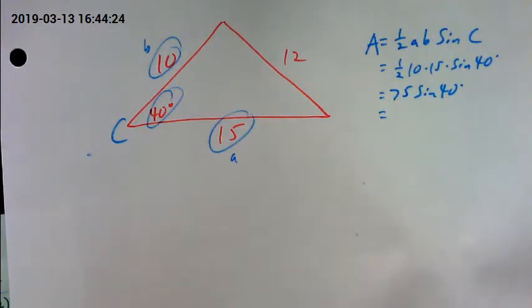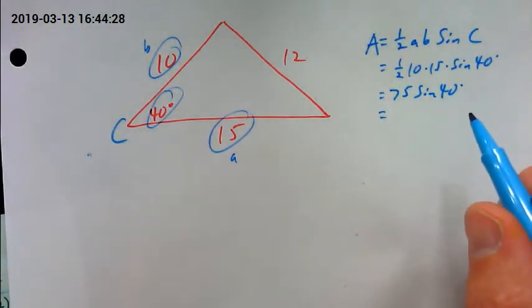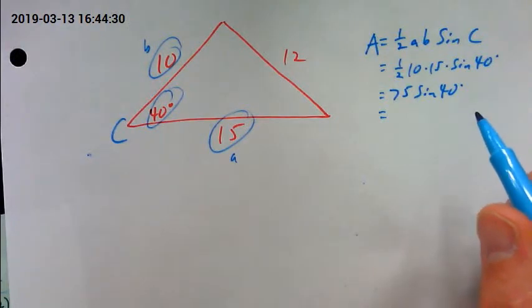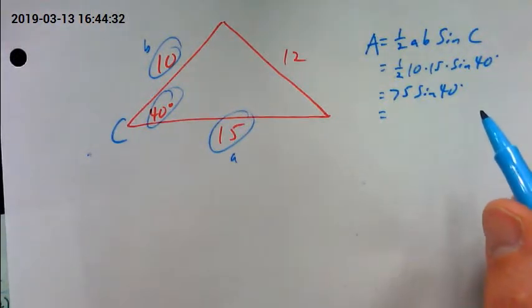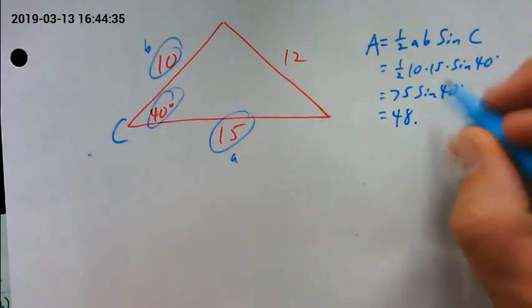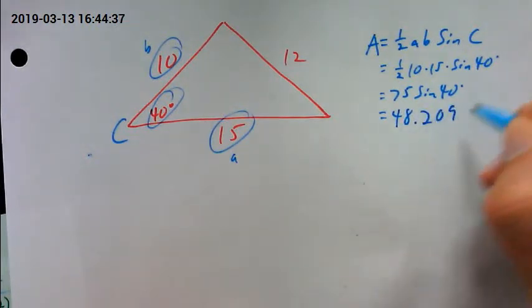Alright. So on here you'd have to actually multiply that out. Which—48.2. What did you get? 48.2. And that'd be our area.